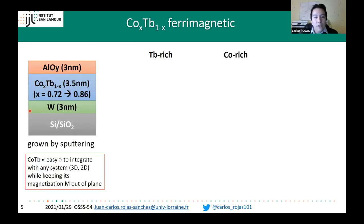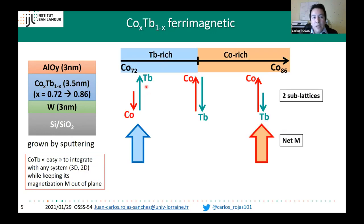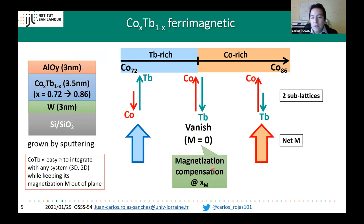In our case, we study the following stack: 3 nm of tungsten as a strong spin Hall effect material, 3.5 nm of cobalt-terbium alloy, coupled with 3 nm of aluminum which is oxidized as a passivation layer. By changing the composition, we can have either the terbium-rich phase—where net magnetization is dominated by the terbium sub-lattice—or the cobalt-rich phase, where net magnetization is dominated by cobalt. At a given composition, both compensate and the magnetization vanishes at the magnetization compensation point.